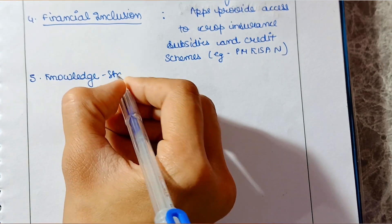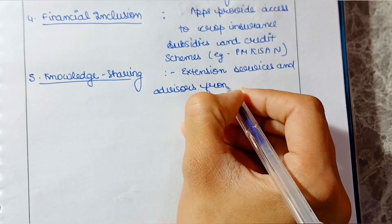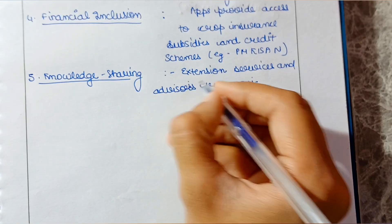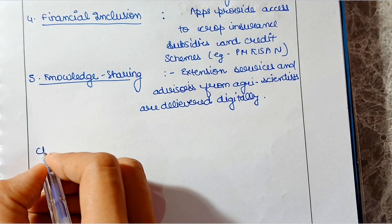Fifth point is knowledge sharing. Extension services and advisories from agri-scientists are delivered digitally.